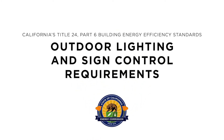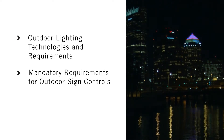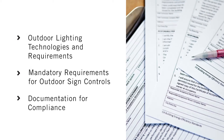Welcome to the Non-Residential Outdoor Lighting and Sign Control Requirements video, where we'll discuss California's Building Energy Efficiency Standards, also known as the Energy Code. You'll learn about outdoor lighting and outdoor illuminated sign control technologies and their mandatory energy code requirements. We'll end by discussing the documentation needed to demonstrate compliance with the Energy Code.